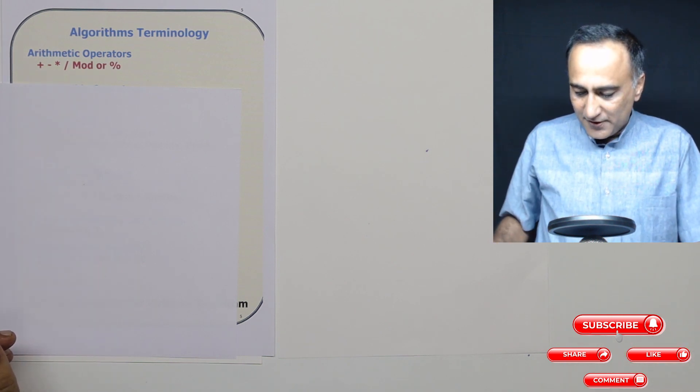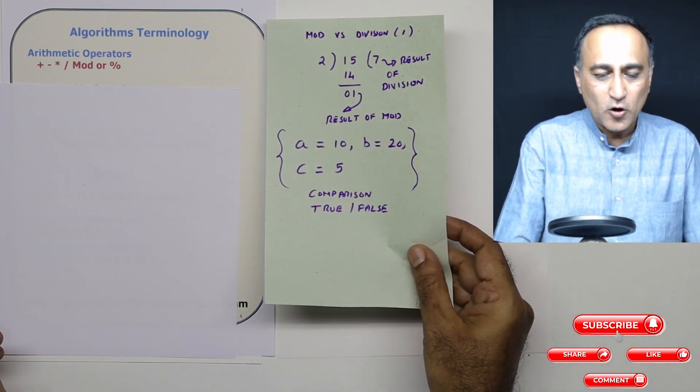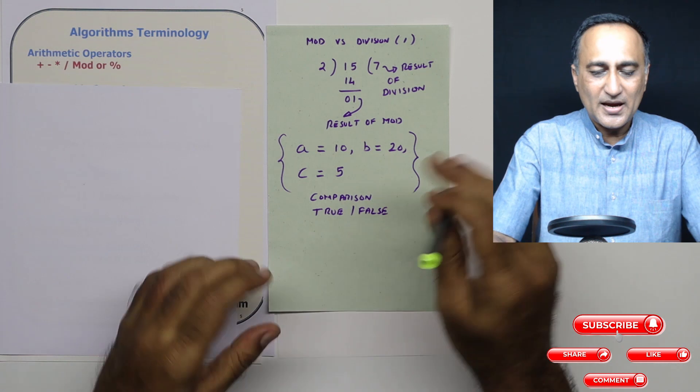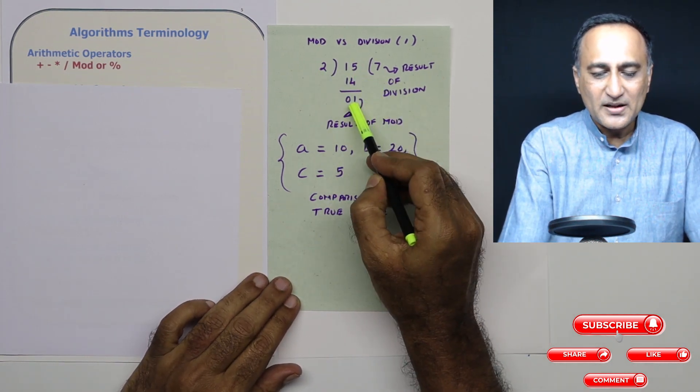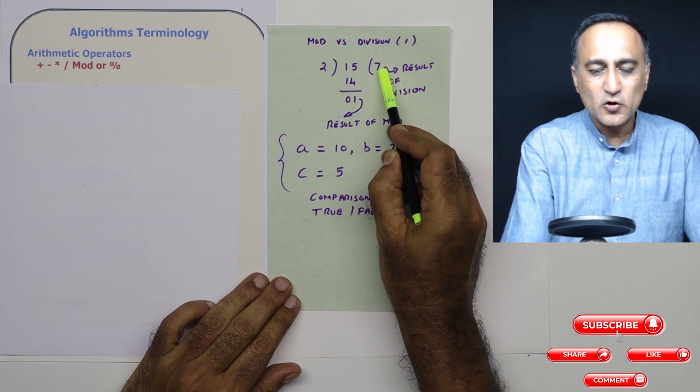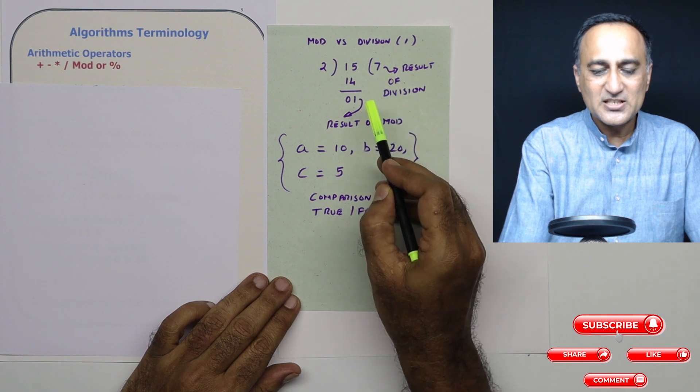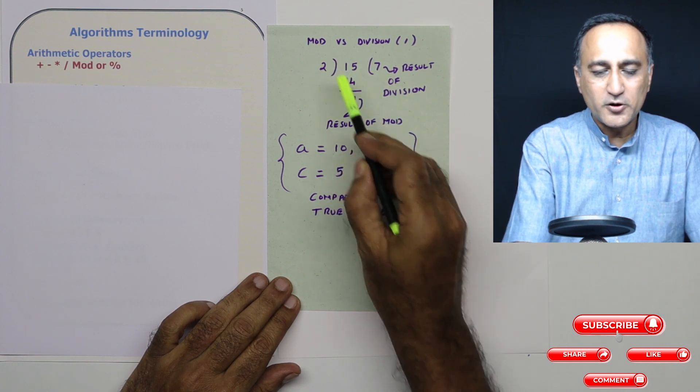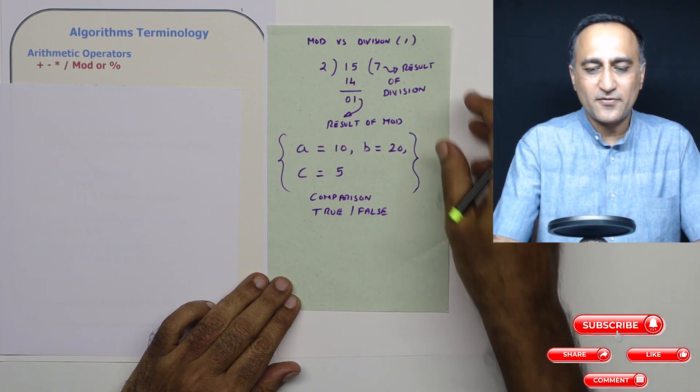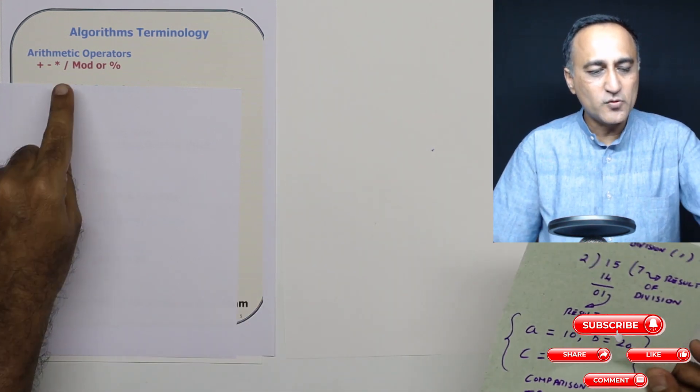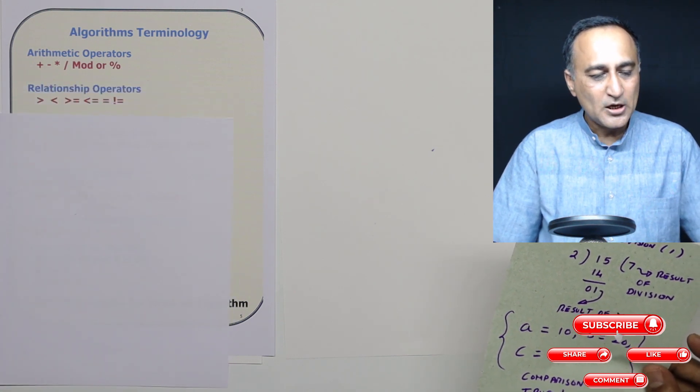Let me try to differentiate between division and mod operator. Suppose I have 15. If I divide 15 by 2, the remainder is 1 and the quotient is 7. Division will give you 7, whereas if you do 15 mod 2, you will get the remainder which is 1. That's the difference between division and mod operator. I'll use the mod word or the percentage symbol like in C.